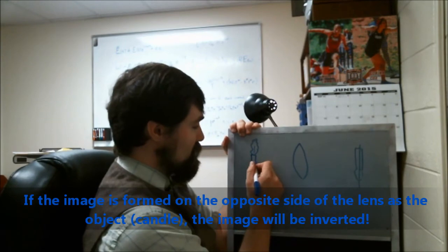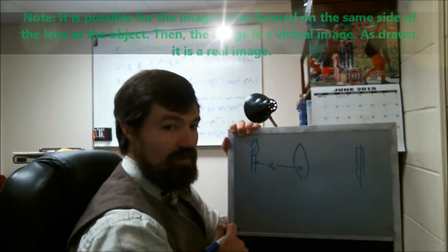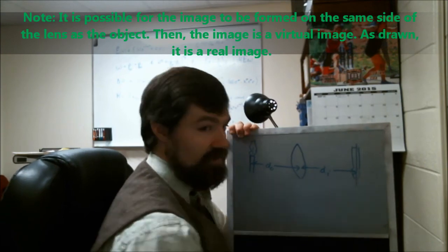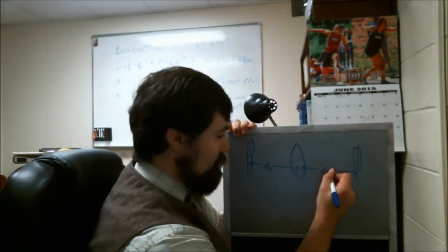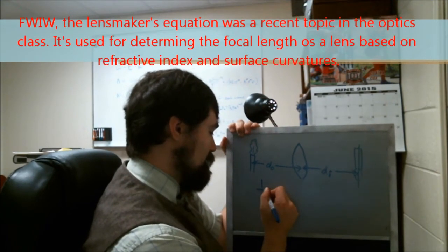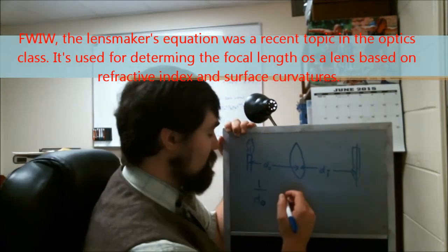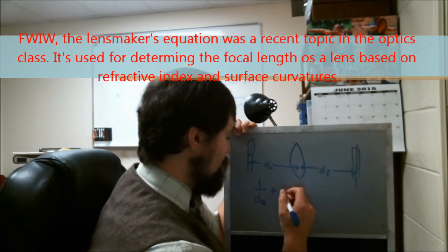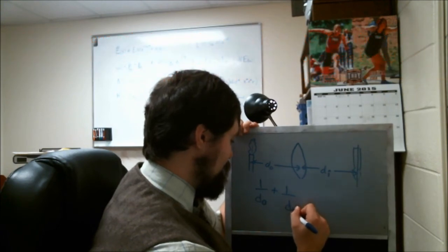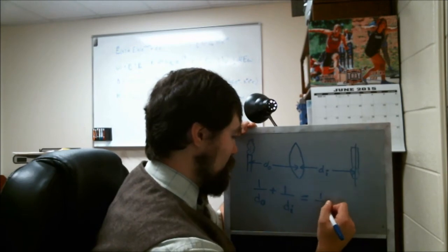Okay, so you get some image of the candle. And this distance right here is your object distance, DO. This distance right here is your image distance, DI. And according to the lens makers equation, 1 over DO. Sorry, this is not the lens makers equation. This is the thin lens equation.